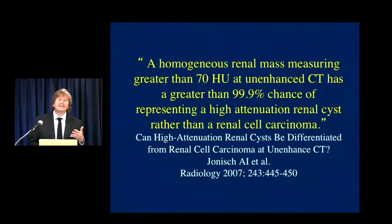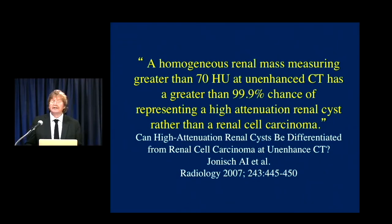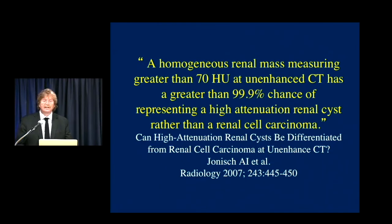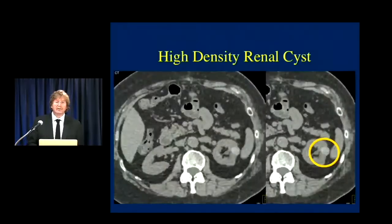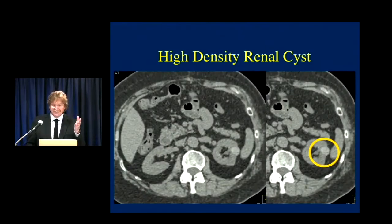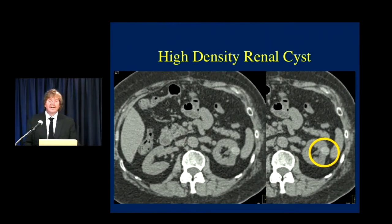Non-contrast CT can be very helpful in the kidneys. It tells you the density of a lesion. If you see a homogeneous renal mass measuring over 70 Hounsfield units on non-contrast CT, there's a 99.9% chance it's simply a high-attenuation renal cyst, not a tumor. For example, a lesion measuring 73 Hounsfield units that is well-defined is a high-density renal cyst — a leave-alone lesion.